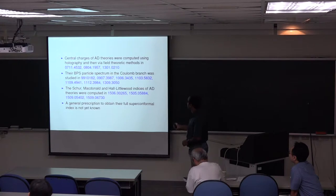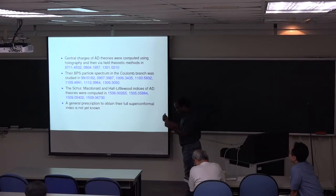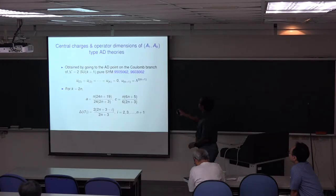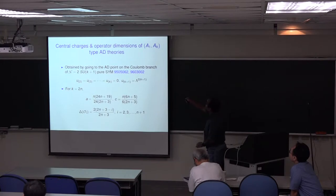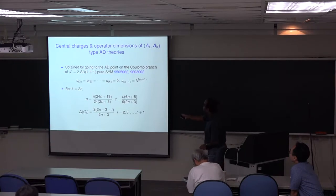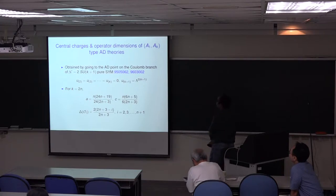For the time being, I'll only talk about Argyres-Douglas theories, which have a nomenclature scheme where they're labeled by two Lie algebras of ADE type. I will only focus on Argyres-Douglas theories labeled by A1,AK and also A1,DK. The central charges and operator dimensions of A1,AK type Argyres-Douglas theories were obtained in these papers.